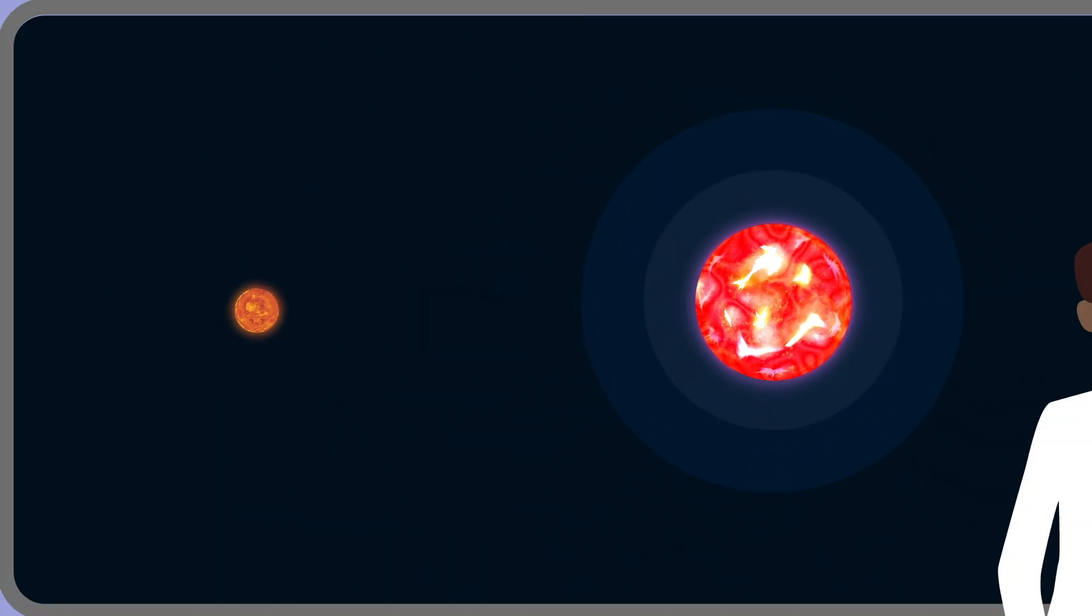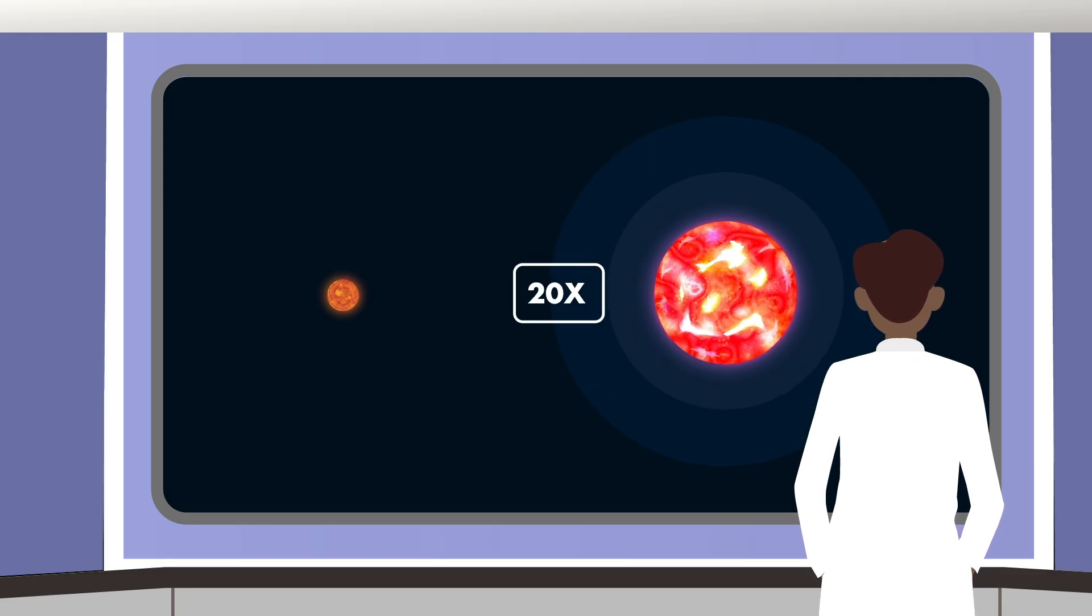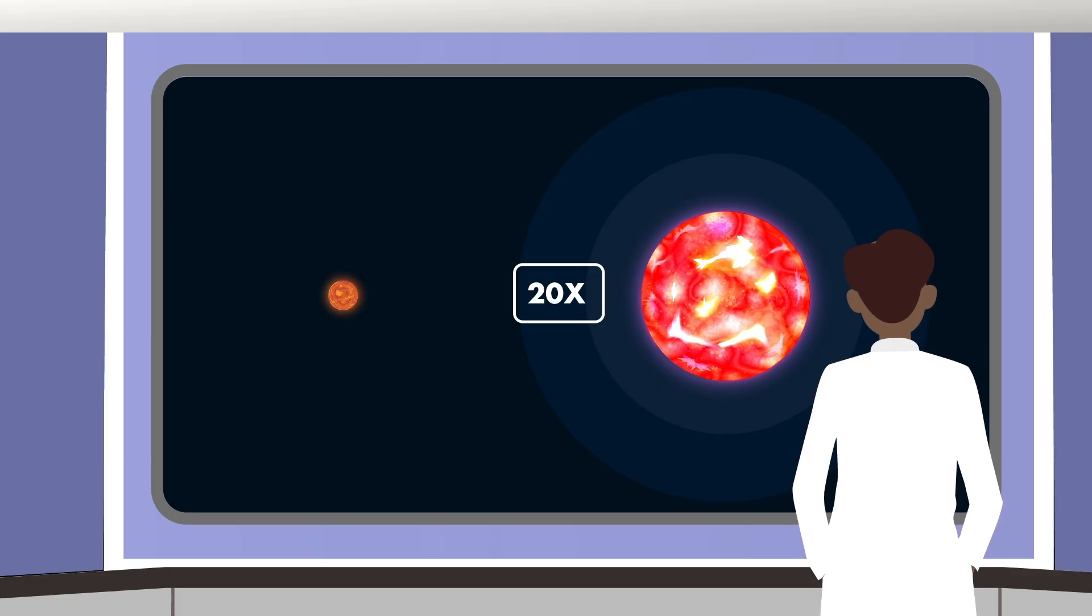Astronomers often measure the size of stars in relation to our sun. A star must initially be at least eight times more massive than the sun to supernova, and at least 20 times more massive to create a black hole.